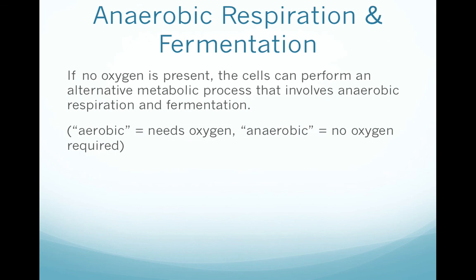For cellular respiration to run its full course, oxygen is required. However, in some situations — such as muscle cells undergoing really intense exercise — the cell can run out of oxygen. If that happens, the cell can perform an alternative type of respiration called anaerobic respiration. Aerobic and anaerobic are opposites: aerobic means oxygen is required, and anaerobic means oxygen is not required — and may actually be detrimental, as in the case of anaerobic bacteria that die in the presence of oxygen. Make sure you know those terms.